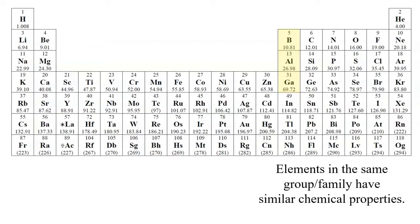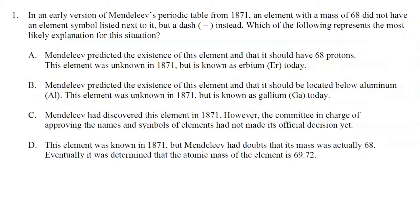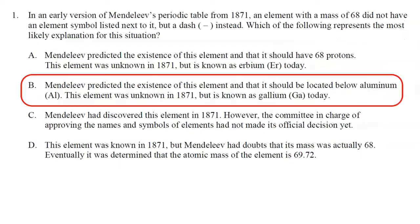Eventually, the element directly underneath aluminum on the modern periodic table — gallium — was discovered, and it did have properties very similar to those that Mendeleev had predicted. So the correct answer to number one is B: he had predicted the existence of this element, that it should be located below aluminum, and it was known as gallium.